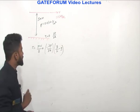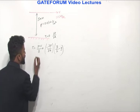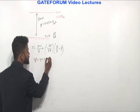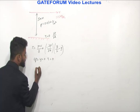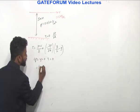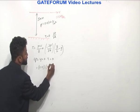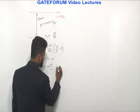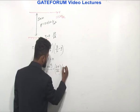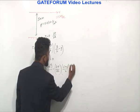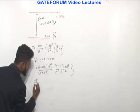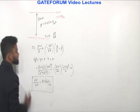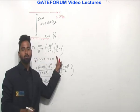At y = 0 (lower plate), the shear stress τ = 0. Substituting: 0 = 0.01 × (1 × 10⁻²) / (5 × 10⁻³) − (∂p/∂x) × (5 × 10⁻³ / 2) − 0. Solving this gives ∂p/∂x = 8 newton per meter square per meter.